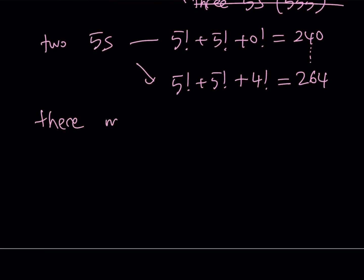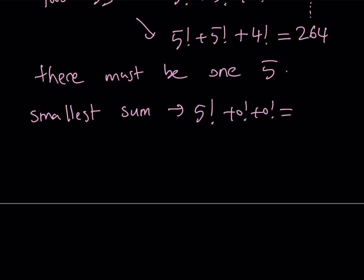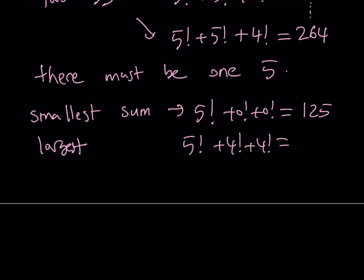So we have to have exactly one 5. If we have one 5 only, then the smallest sum we can get is 5 factorial plus 0 factorial plus 0 factorial, which is 122. Wait — that is going to be 121 plus 1, which is 122. Actually, 5 factorial is 120, plus 1 plus 1, giving 122. And the largest sum we can get is 5 factorial plus 4 factorial plus 4 factorial, which is going to be 168. So our number has to be in the range 125 to 168, which means the hundreds digit must be 1.